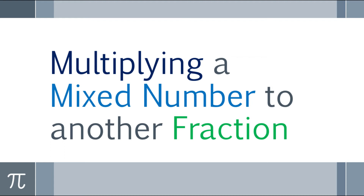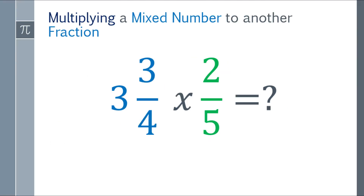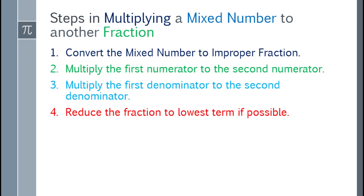Next: how to multiply a mixed number by a fraction. We have the problem three and three fourths multiplied by two fifths. The steps are: first, convert the mixed number to an improper fraction. Second, multiply the first numerator by the second numerator. Third, multiply the first denominator by the second denominator. Lastly, reduce the fraction to lowest terms if possible.